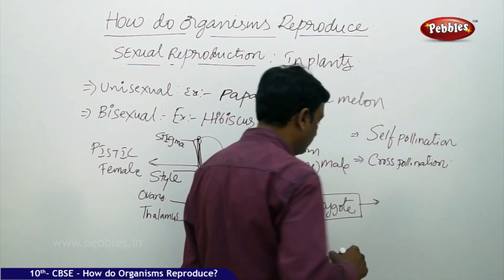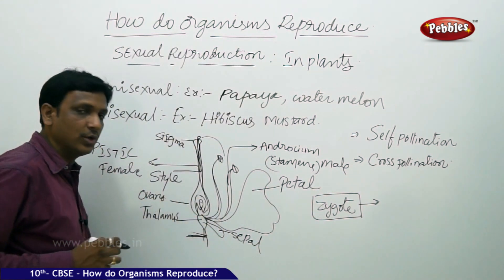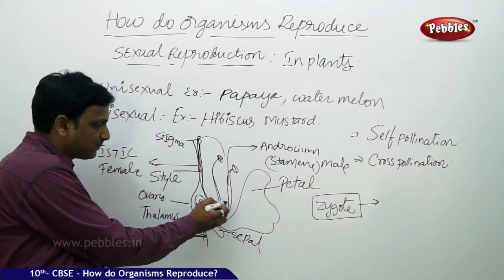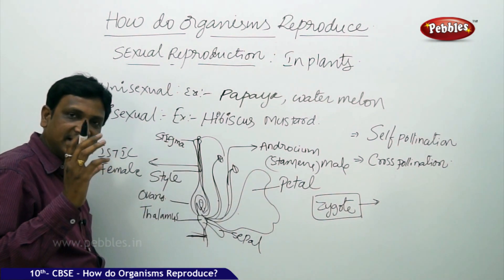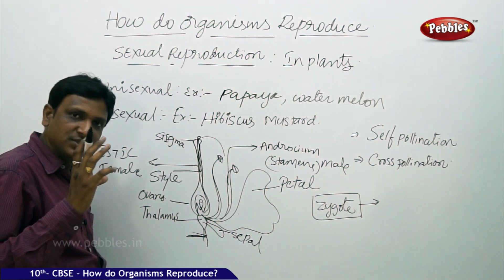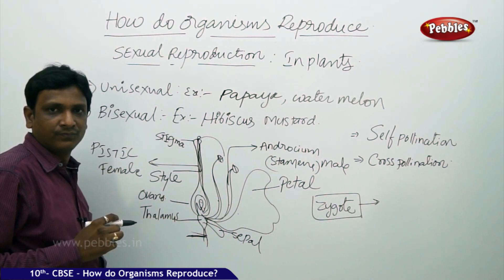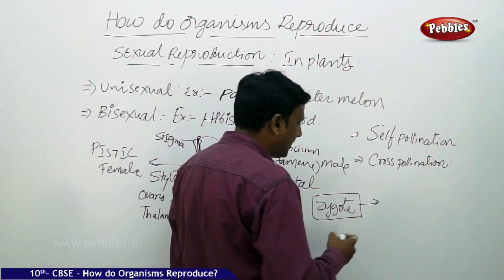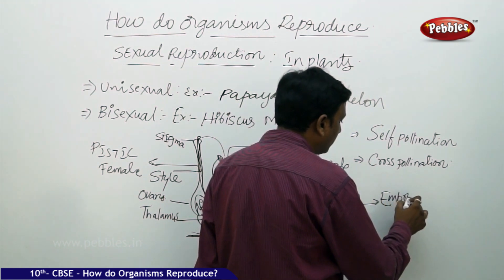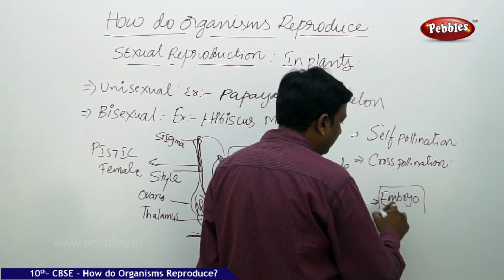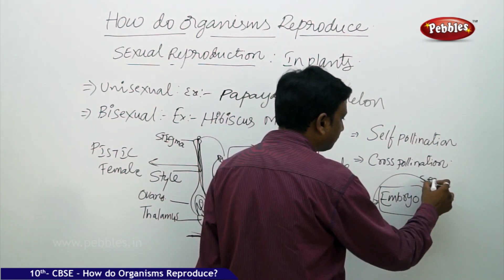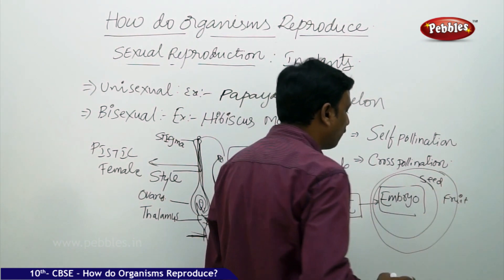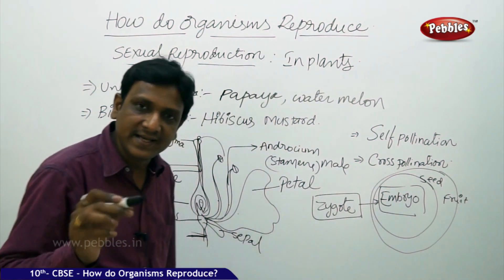Once the zygote is formed inside the ovule, the flower loses all its other parts, and the ovary increases in size — the ovary becomes the fruit. The ovule becomes the seed, and the zygote becomes the embryo. So: the embryo is covered by the seed, the seed is covered by the fruit, the fruit consists of the seed, and the seed consists of the embryo.